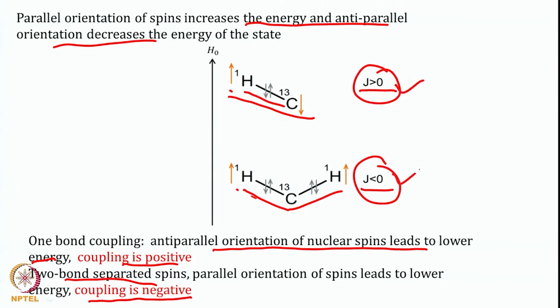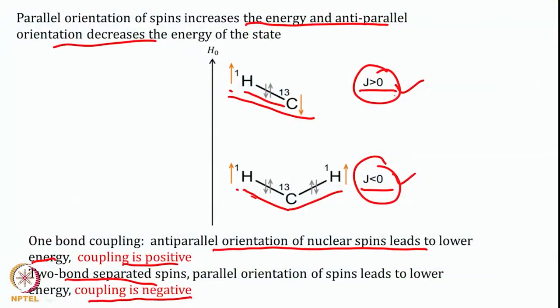So we can have the value of J as positive and negative, depending upon the orientation of spins. One important thing to remember — J coupling is field independent. Chemical shift was field dependent, and when we expressed it in PPM value it became field independent. J coupling is invariably field independent, so the positive and negative sign depends upon orientation but does not depend upon which field we are recording. It is a constant value.